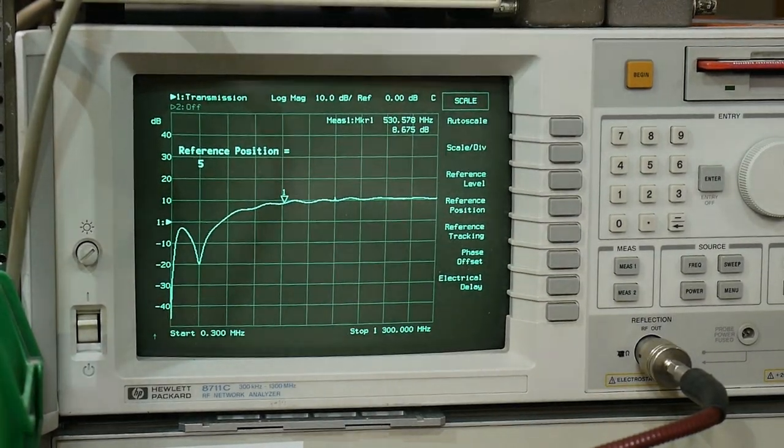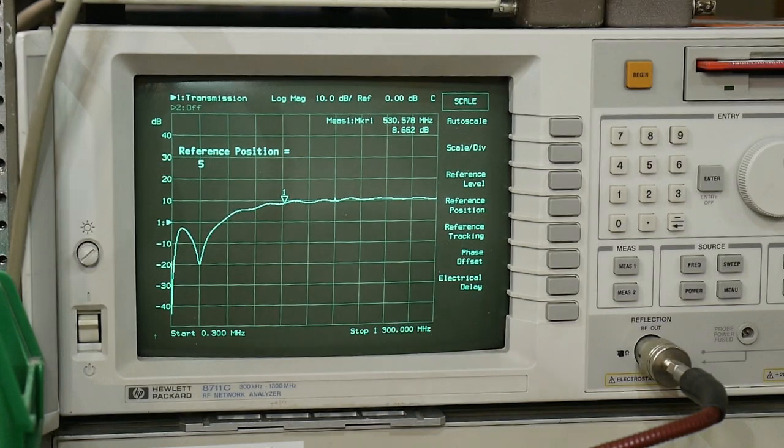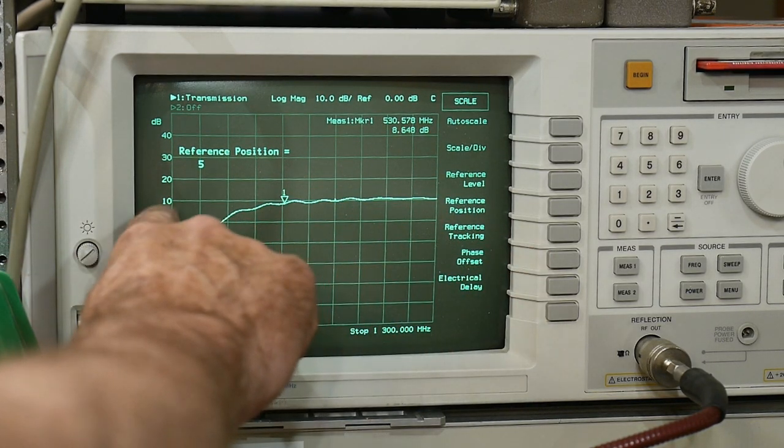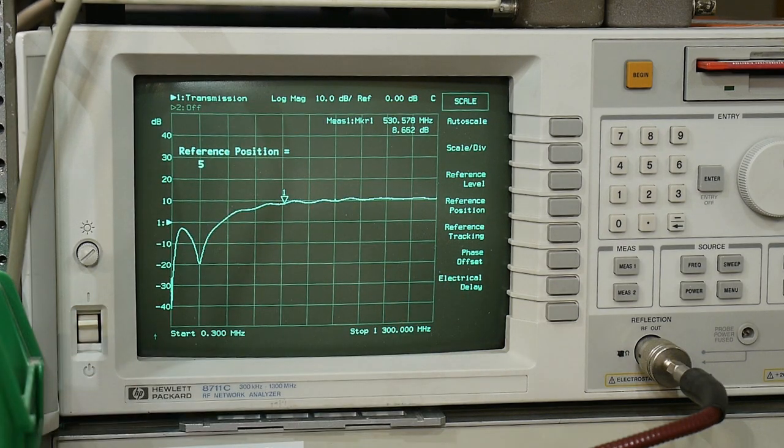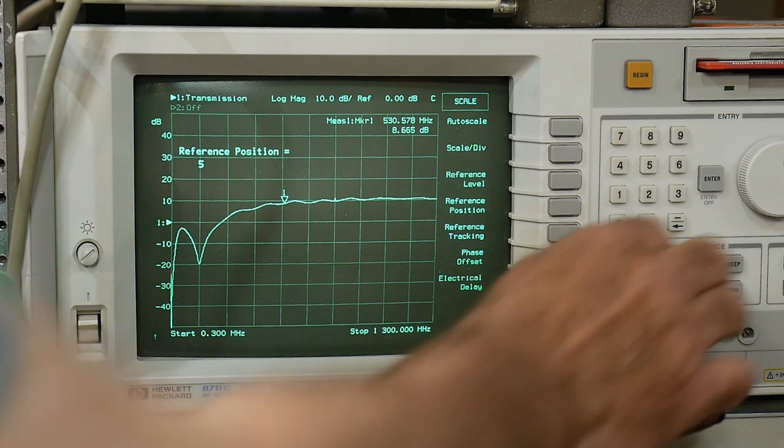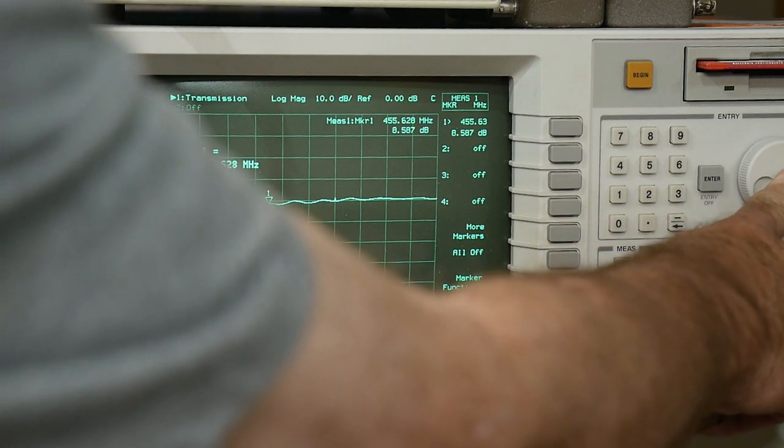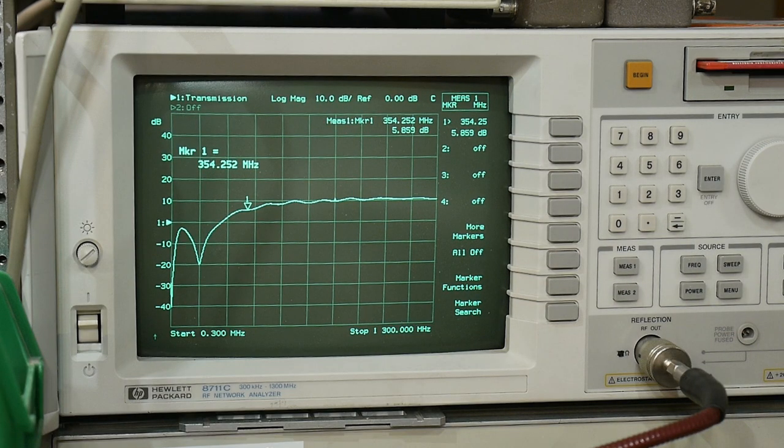All right. So the amplifier is giving us about 10 dB of gain. And so let's zoom in on that. It's obviously not working here at lower frequencies. Let's put a marker here. It's definitely not working below 500 megahertz, it's kind of bad there. But let's zoom in on this.